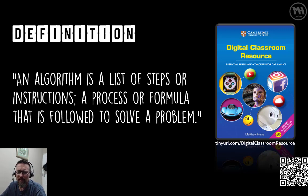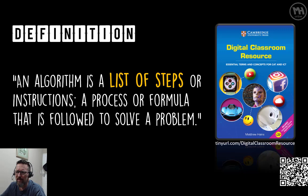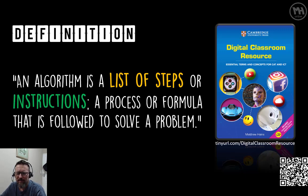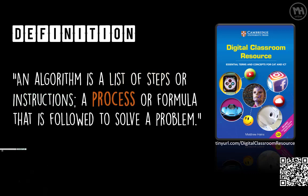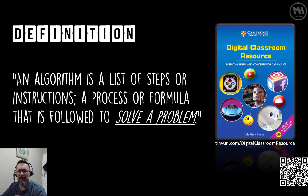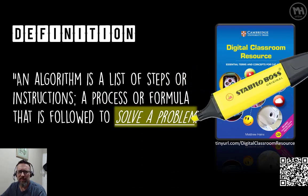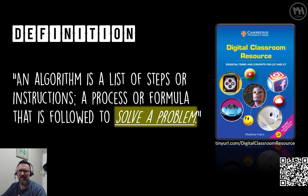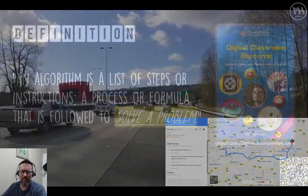The definition of an algorithm: an algorithm is a list of steps or instructions — that's the first thing you need to understand. It's steps or instructions, or we can refer to it as a process or a formula, that is followed to solve a problem. The key word here is solving a problem. Without an algorithm, a computer would not know what to do. It needs to follow a particular path, and that's what we're going to learn about.